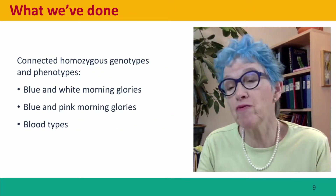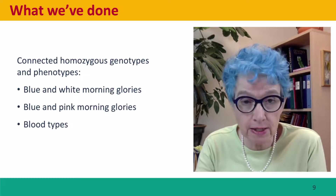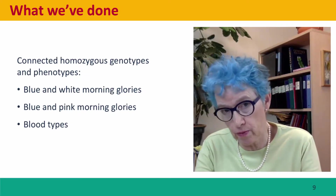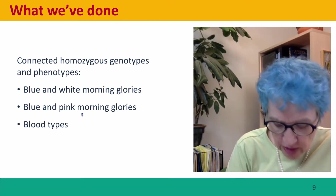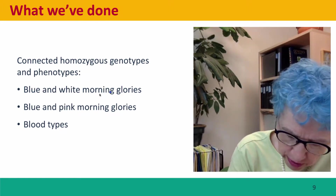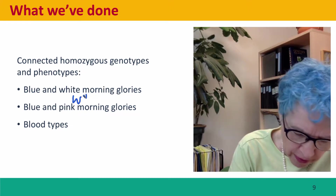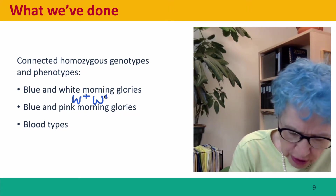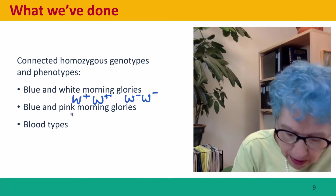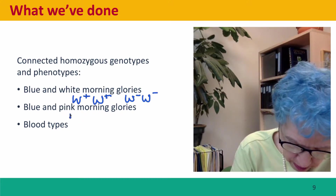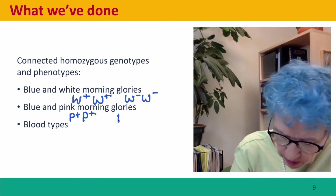So what have we done? We've begun connecting homozygous genotypes and phenotypes across three examples. The blue and white morning glories: the white ones result from mutation of the W allele from W+ W+ in wild type flowers to W− W− in white flowers. The pink morning glories result from mutations in a different gene: blue morning glories have P+ P+ alleles, while pink morning glories have P− P− alleles.